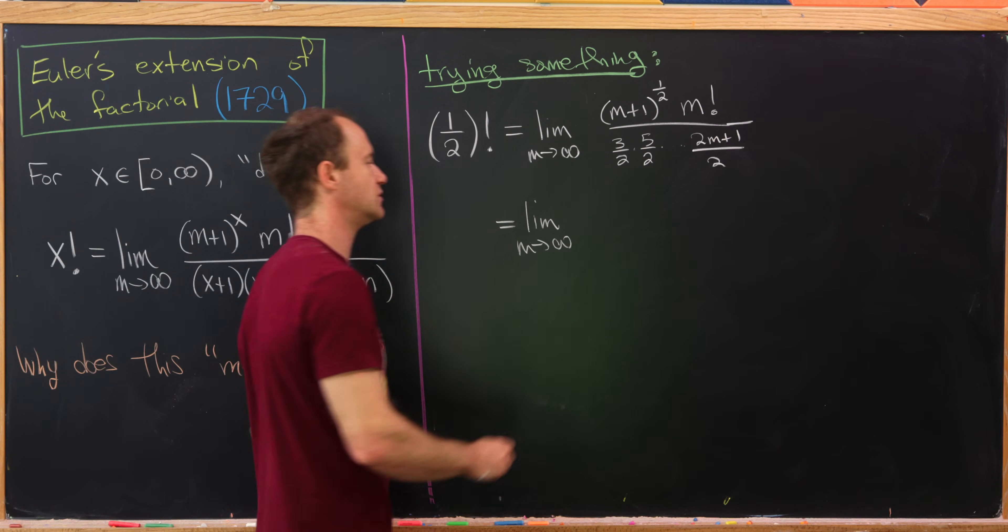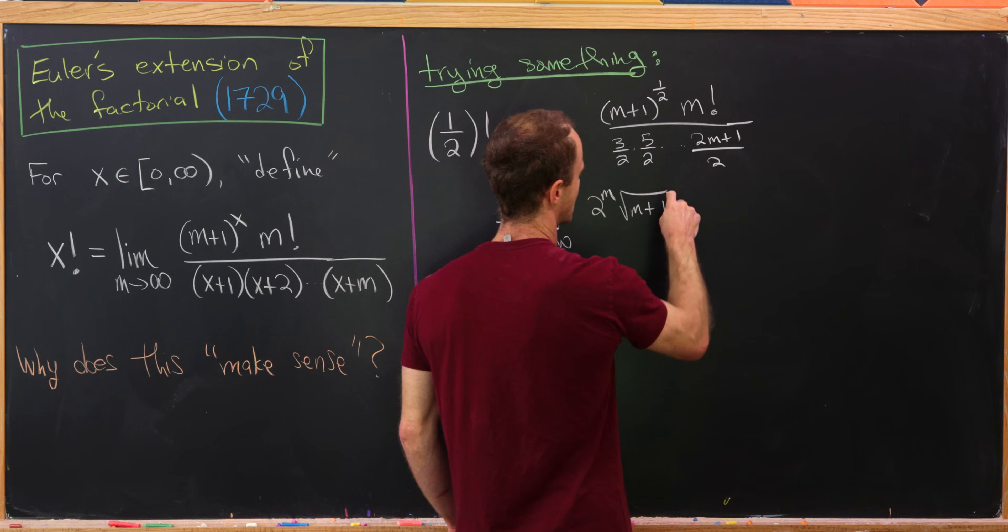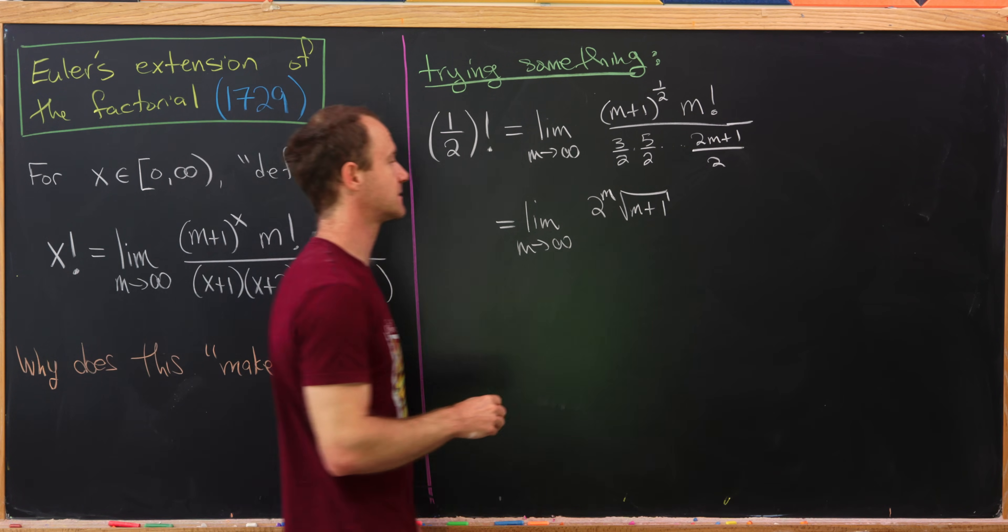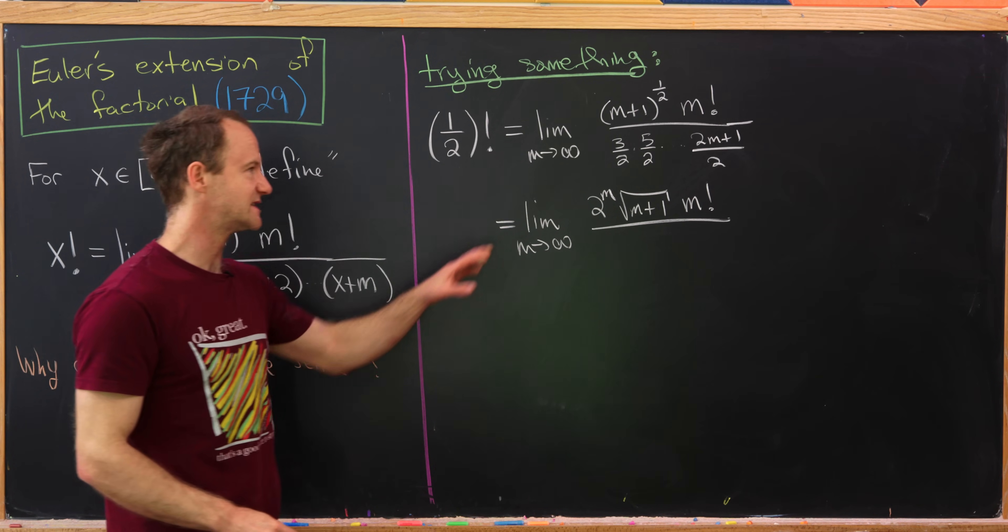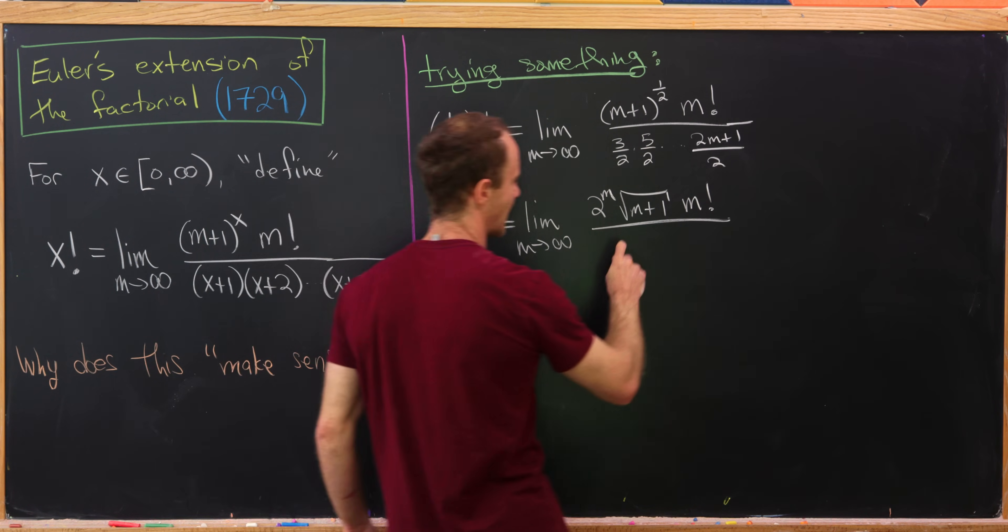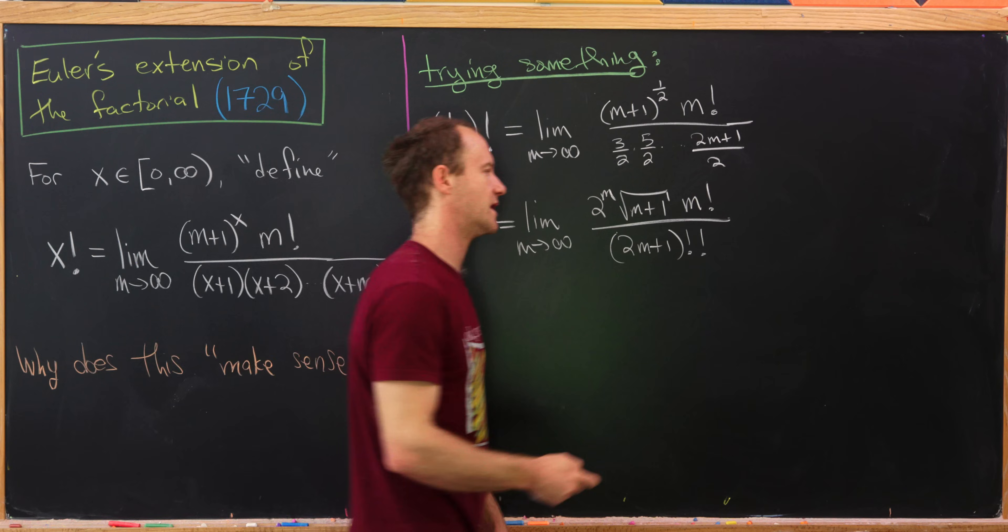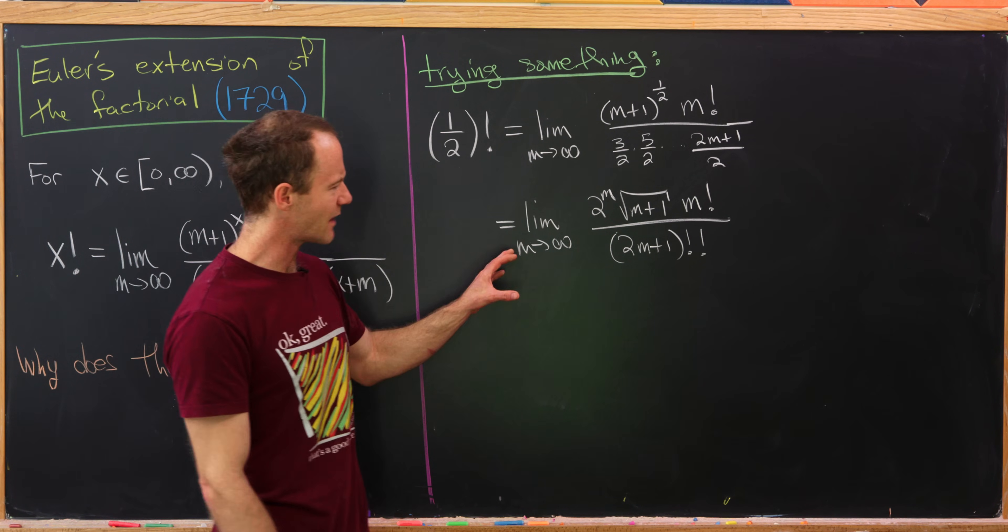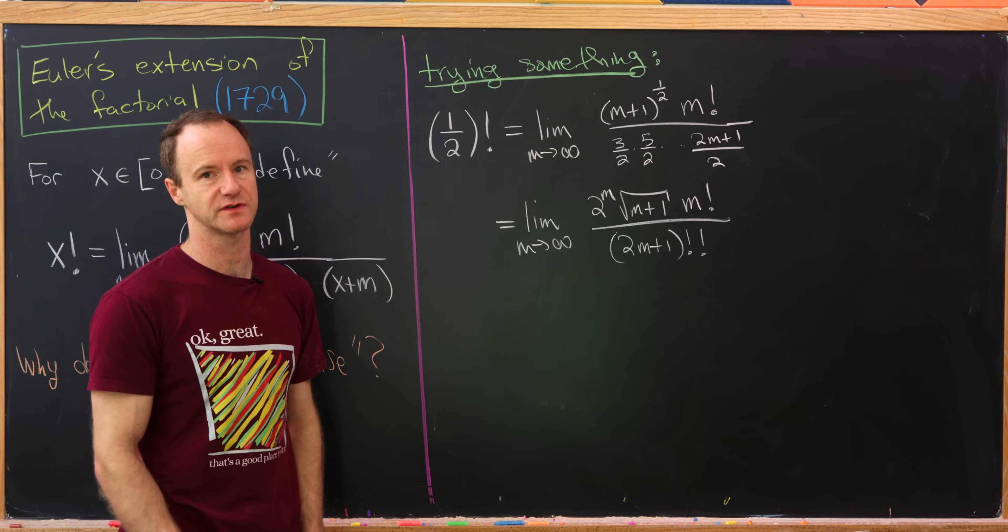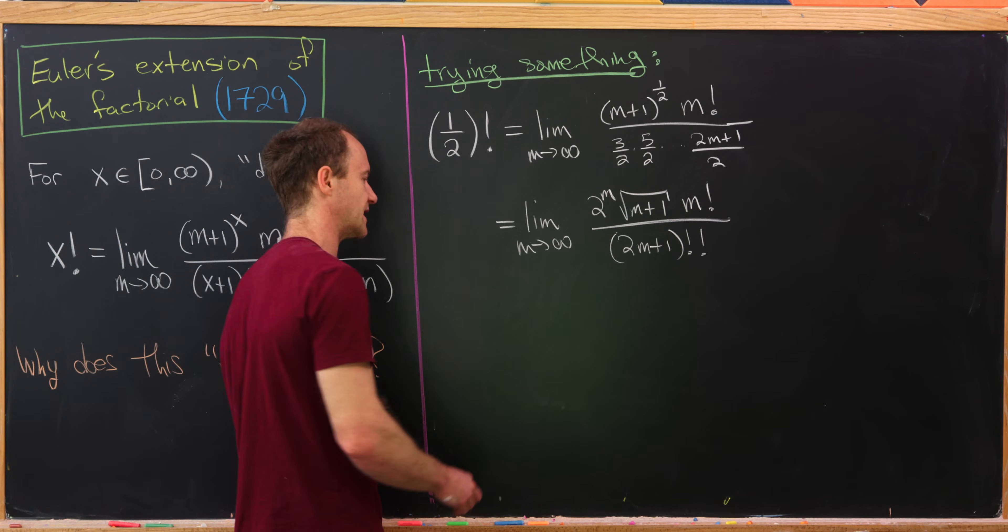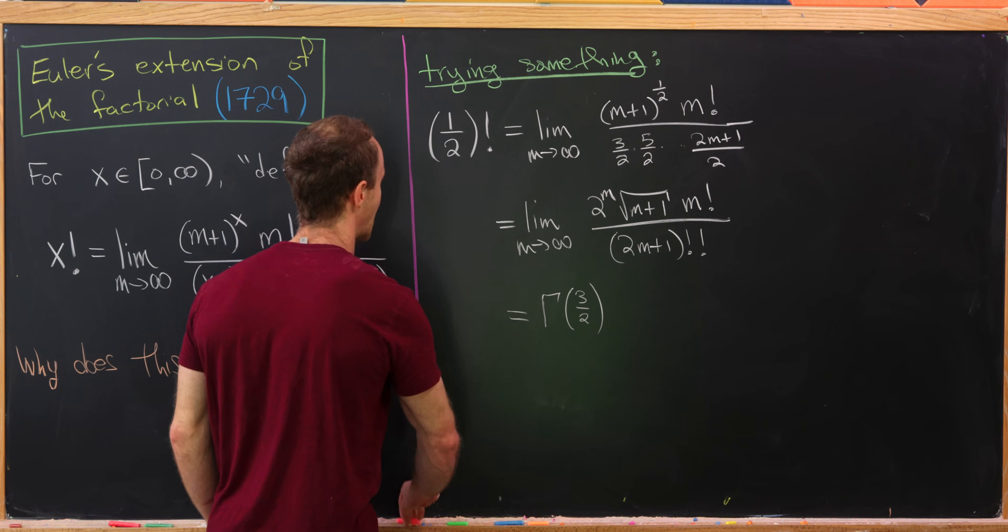And then I'll have m factorial over, well I've got this rising product of odd numbers. Well there's a name for that. That's the double factorial. So this is (2m+1) double factorial. And I haven't worked it out, but I would wager that finding this limit without knowledge of the integral representation of the gamma function would be quite tricky.